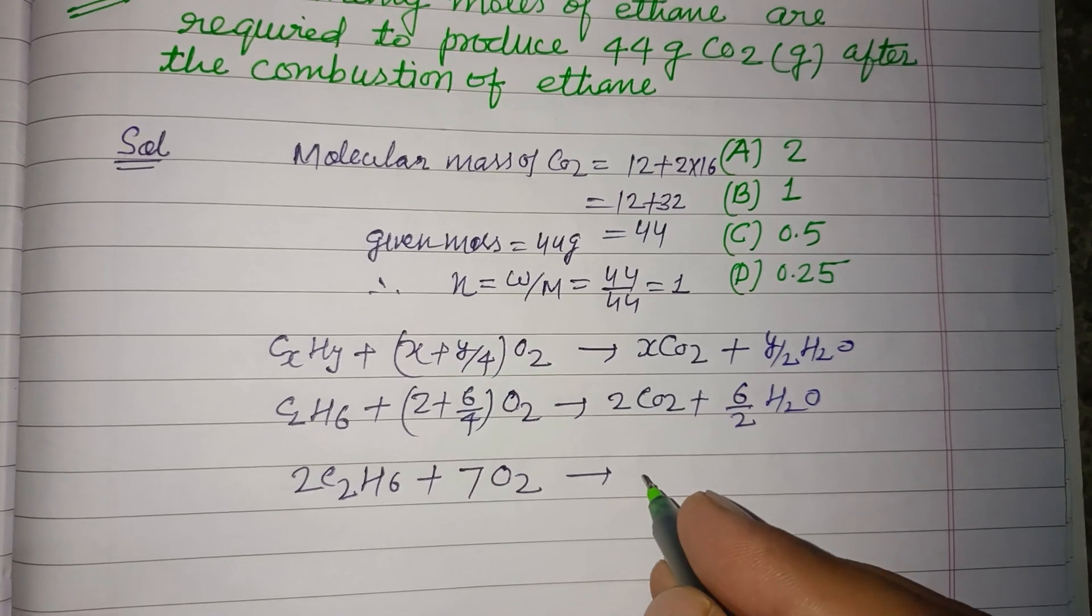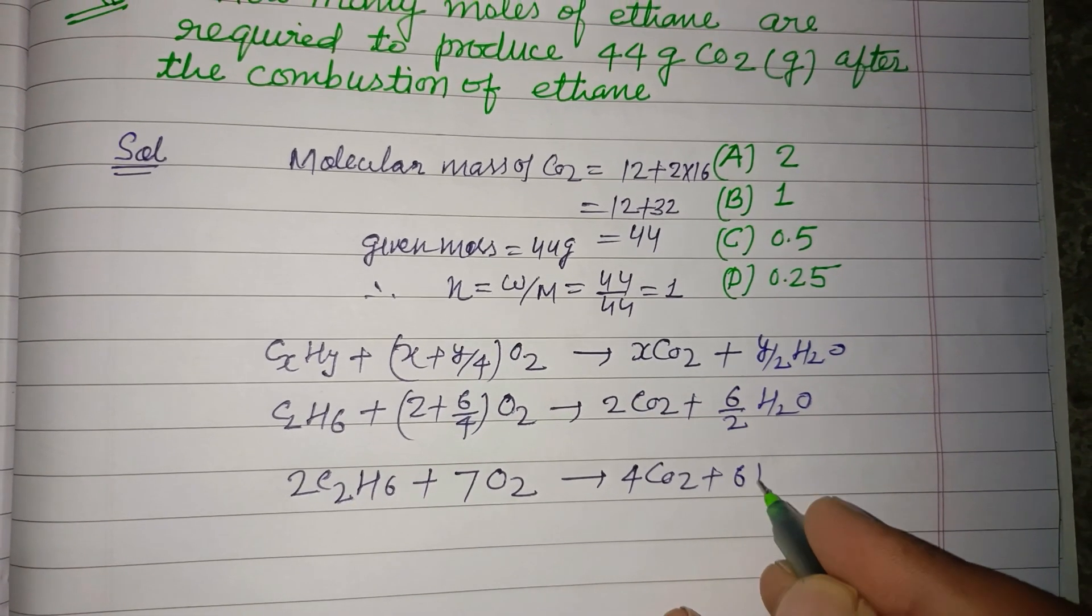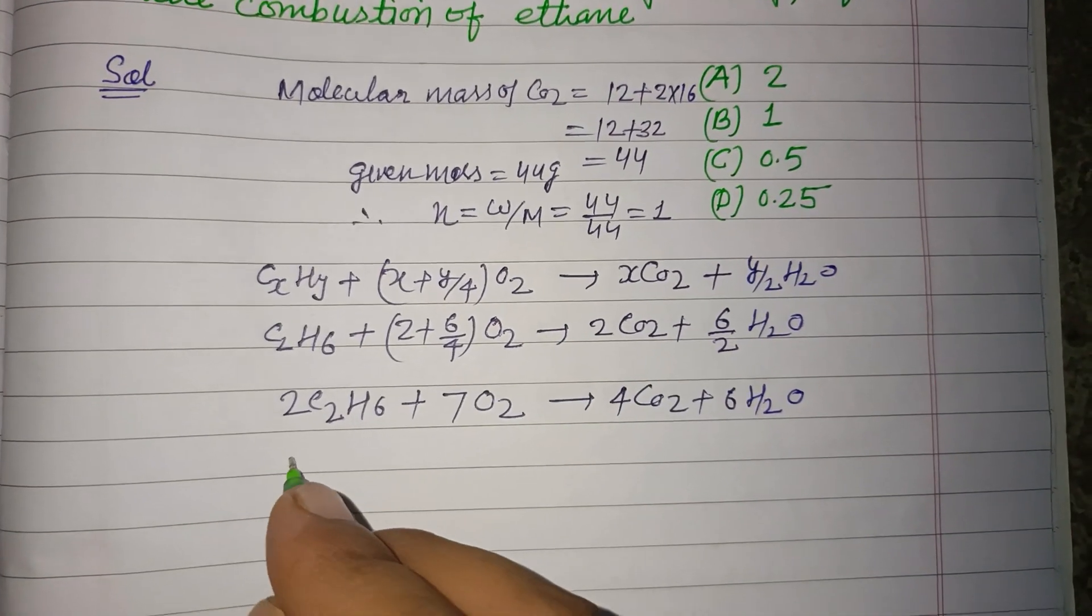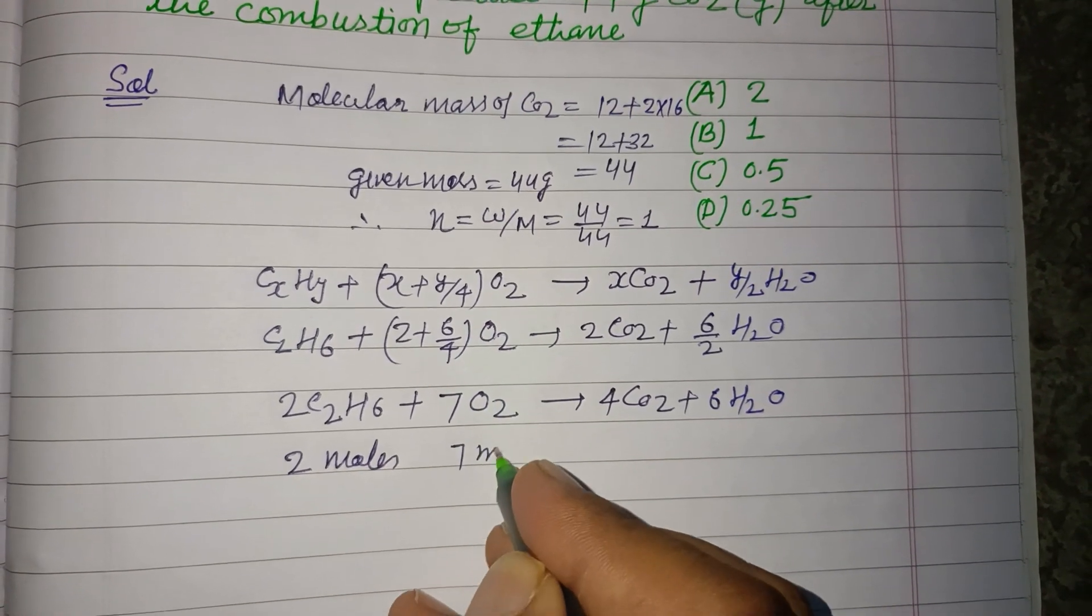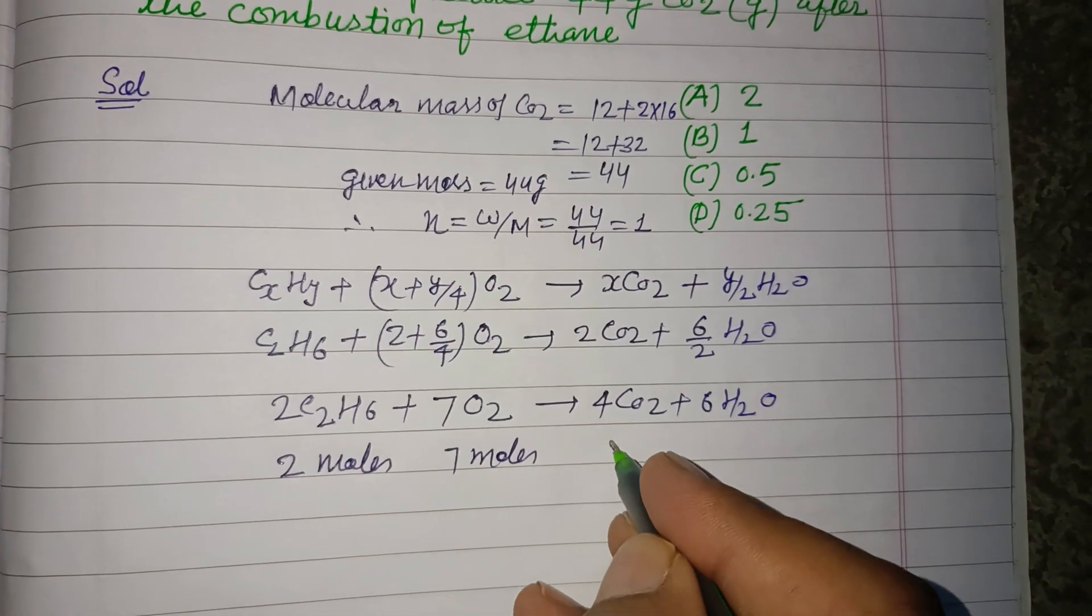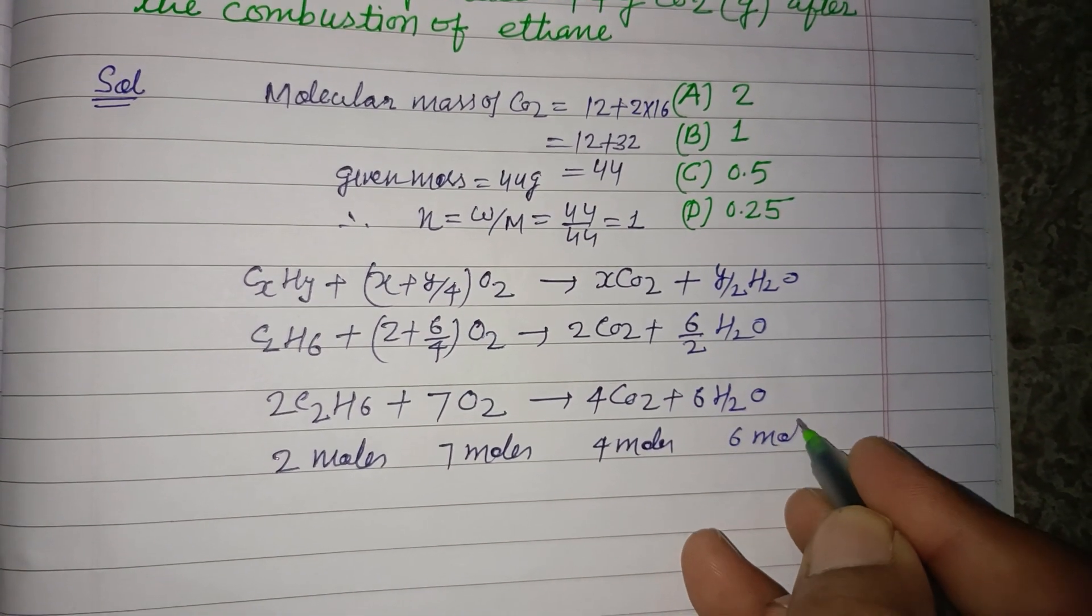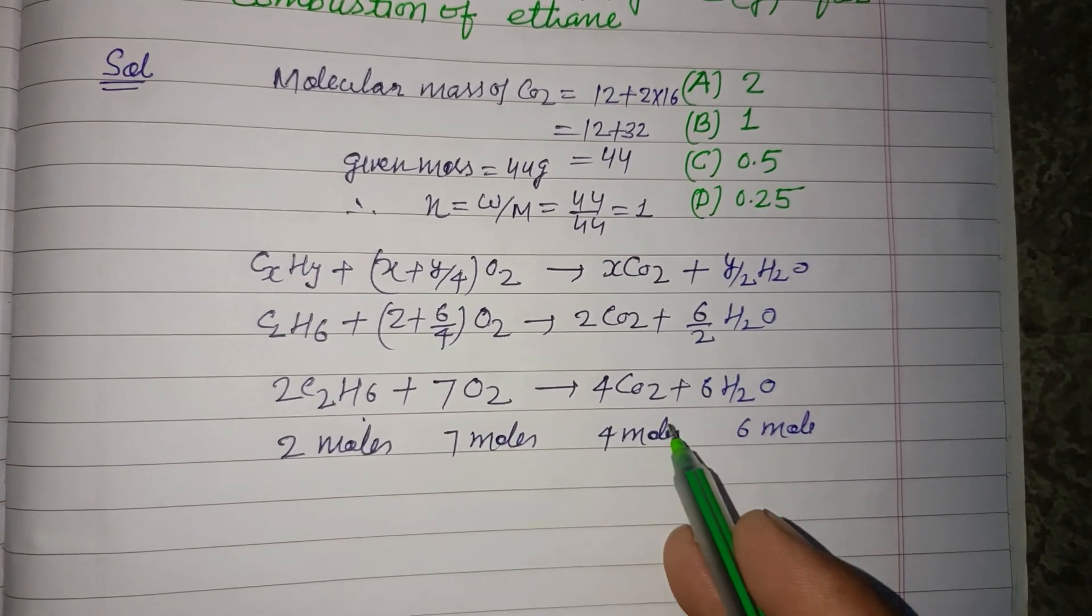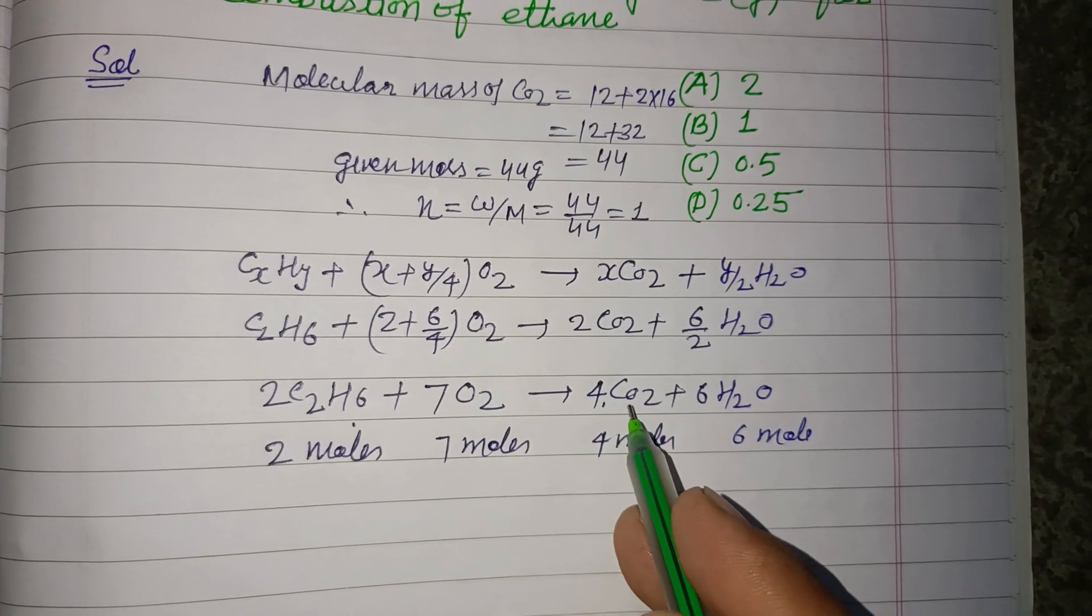Here we have 2 moles, 7 moles, 4 moles, and 6 moles. These are the moles of reactants and these are the moles of products. Four moles of carbon dioxide is obtained by two moles of ethane.